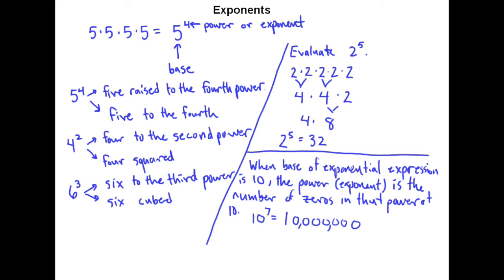You can do the multiplication to confirm that, but that is exactly what it will turn out to be. So 10 to the 4th — you simply write a 1 and then 4 zeros. This is a nice tool for this section, but it will also help you quite a bit particularly in chapter 4. So remember this nice little fact.